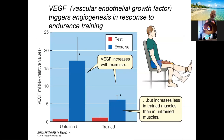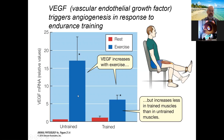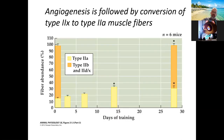Looking at VEGF more closely: in an untrained group, the response to endurance training shows a huge surge in VEGF message — tremendous. After someone is already trained, the effects are less significant, as you reach a leveling-off period. But even in well-trained individuals, there's still an increase from rest to exercise in VEGF. Similarly, there's an increase in type 2A and a proportionate decrease in type 2X.